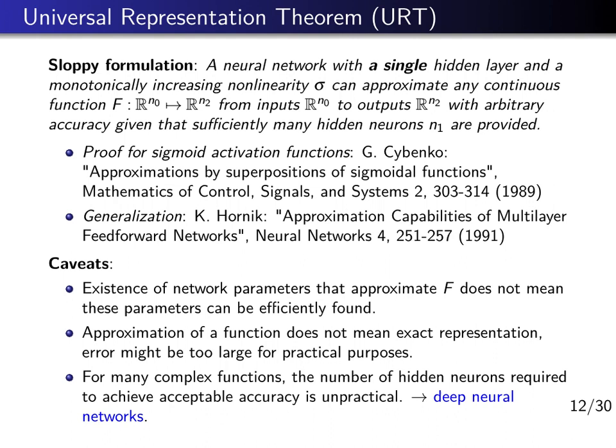In particular, there are examples where the number of hidden neurons needed to get a fixed requested accuracy in approximating a function is exponentially large in the input size. In such cases, deep neural networks may perform much better — the number of neurons needed per layer to get good approximation accuracy can be much smaller in deep networks than in shallow ones.